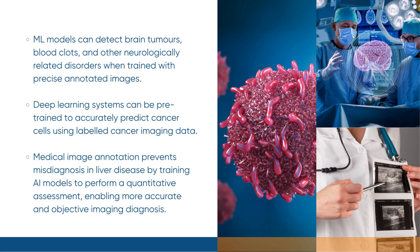ML models can detect brain tumors, blood clots, and other neurologically related disorders when trained with precise annotated images. Deep learning systems can be pre-trained to accurately predict cancer cells using labeled cancer imaging data. Medical image annotation prevents misdiagnosis in liver disease by training AI models to perform a quantitative assessment, enabling more accurate and objective imaging diagnosis.